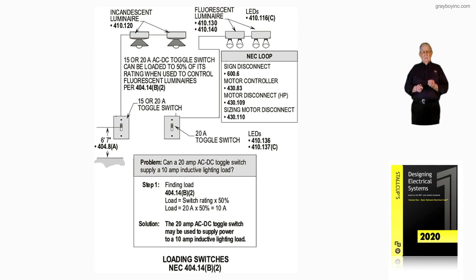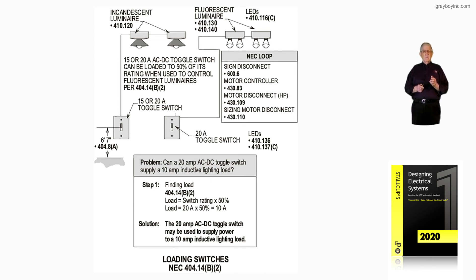What's important is that when an electrician is switching lighting loads with a toggle switch, be sure you know: is it strictly AC rated, is it DC rated, or is it AC-DC rated? Remember, as electricians you sometimes go into existing installations where these switches are already there — they're existing.